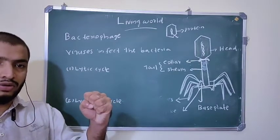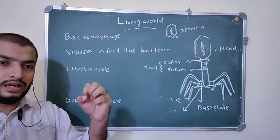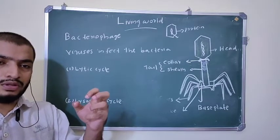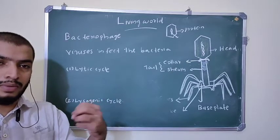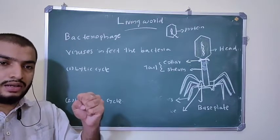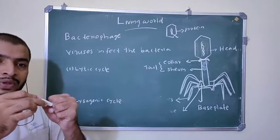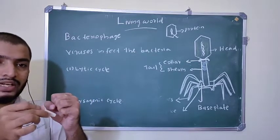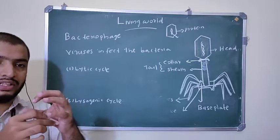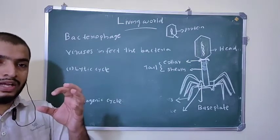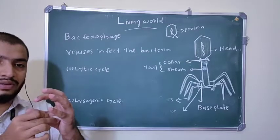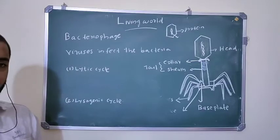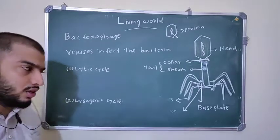Under unfavorable conditions, bacteria produce fewer copies. When bacteriophage infect these bacteria, they do not kill the bacteria — instead they live inside, and their DNA material integrates with the bacterial chromosome. This is the lysogenic cycle. That is the difference between lytic and lysogenic cycles.